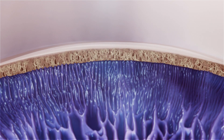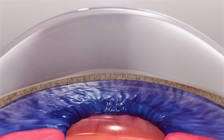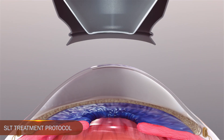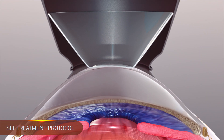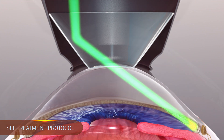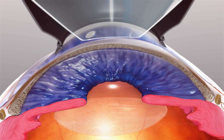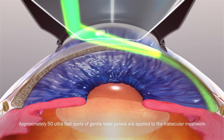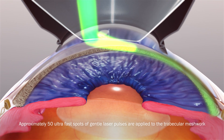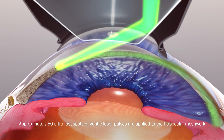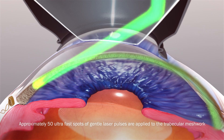Before the procedure, eye drops are administered to prepare the eye for SLT. Then, a laser lens is placed onto the eye to focus the laser light. Approximately 50 ultra-fast spots of gentle laser pulses are applied to the trabecular meshwork. The entire process takes just a few minutes.